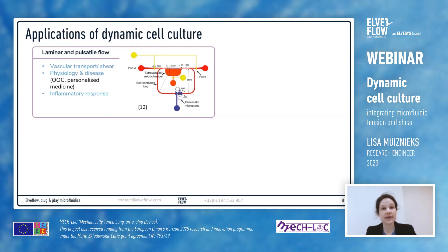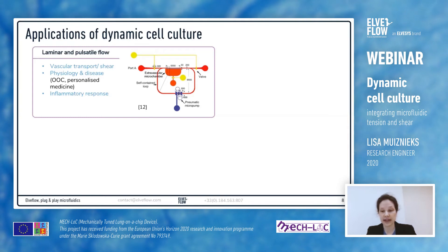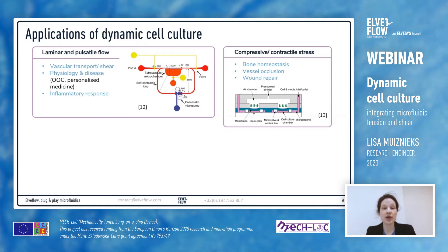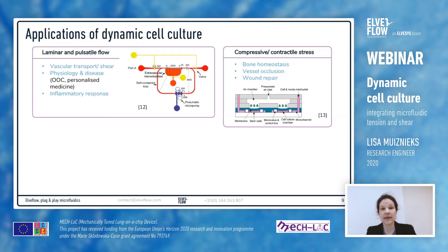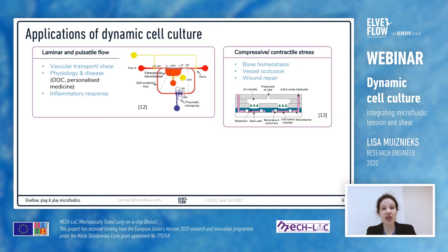The ability to add flow also enables researchers to study inflammatory response, for example the rolling and adhesion of neutrophils. The ability to add compressive or contractile stress opens up research in bone homeostasis, for example in diseases such as osteoporosis. It enables researchers to study vessel occlusion in atherosclerosis and cardiovascular disease, and allows models of wound repair to be developed, for example when fibroblasts contract to pull the surrounding tissue and close the wound.